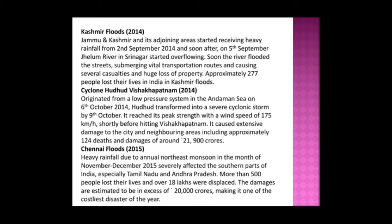The Kashmir Flood of 2014 began when Jammu and Kashmir started receiving heavy rainfall from 2nd September 2014. The Jhelum River in Srinagar started overflowing on 5th September, flooding streets, submerging vital transportation routes, and causing several casualties. Approximately 277 people lost their lives. Cyclone Hudhud struck Visakhapatnam in 2014, originating from a low-pressure system in the Andaman Sea on 6th October. It transformed into a severe cyclone by 9th October, reaching a peak wind speed of 175 km/h, causing approximately 124 deaths and damage of around ₹21,900 crores.